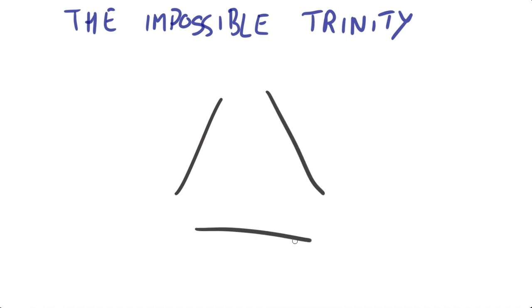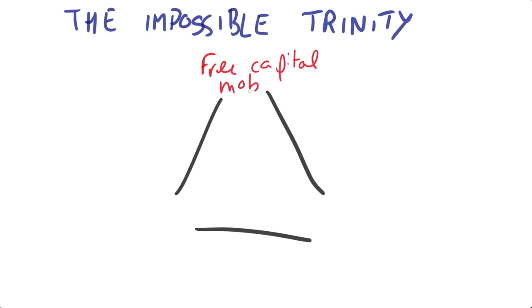The principle of the Impossible Trinity is that there are three sides to a triangle, but each country can only choose two sides. But all countries, ideally, would want to have all three.